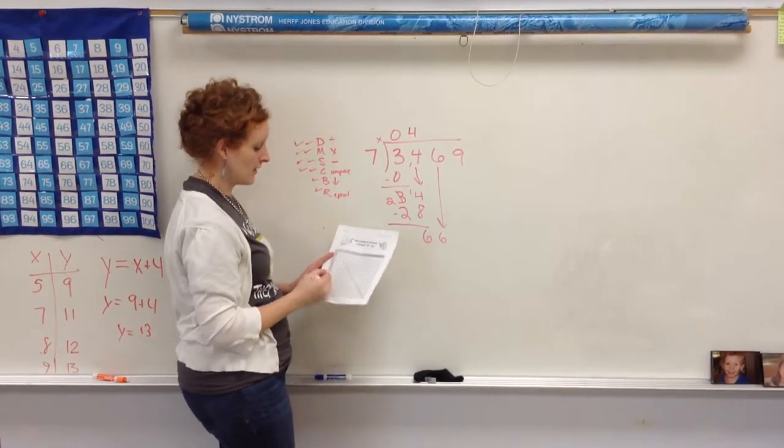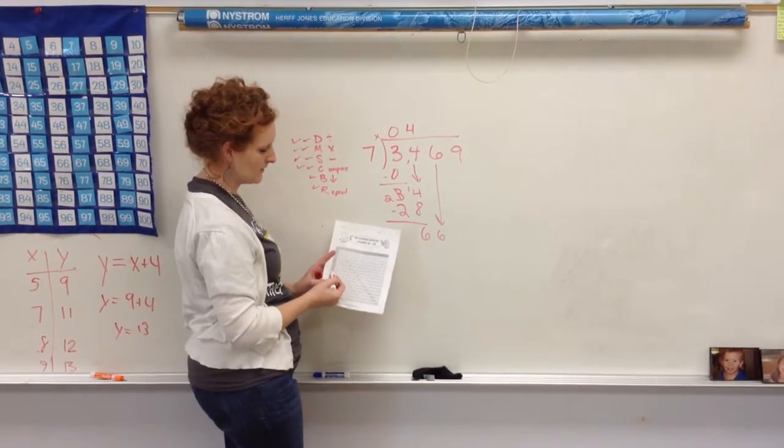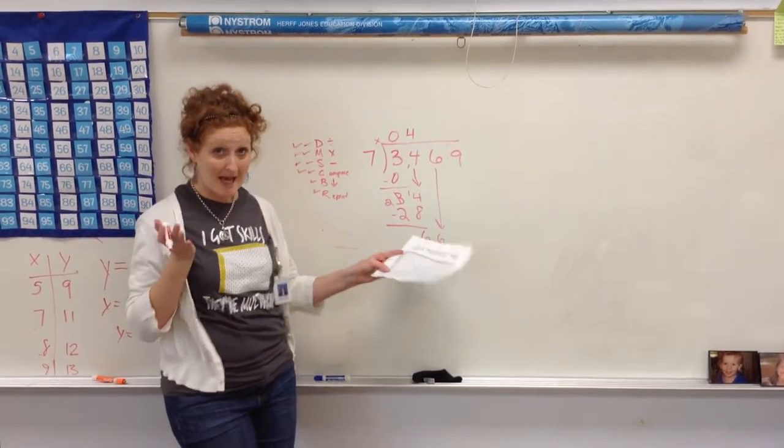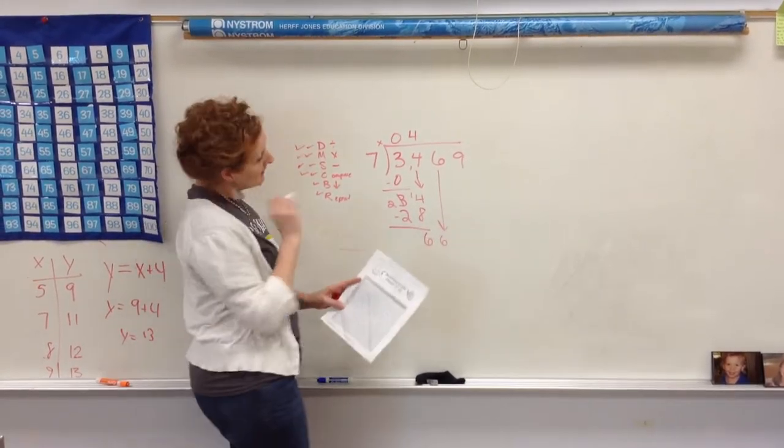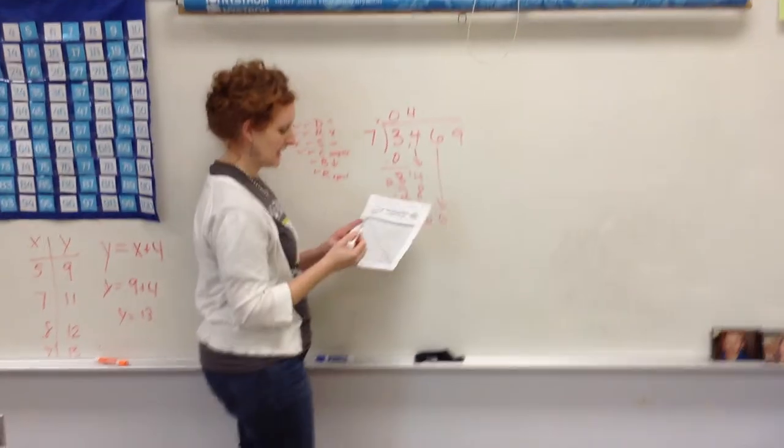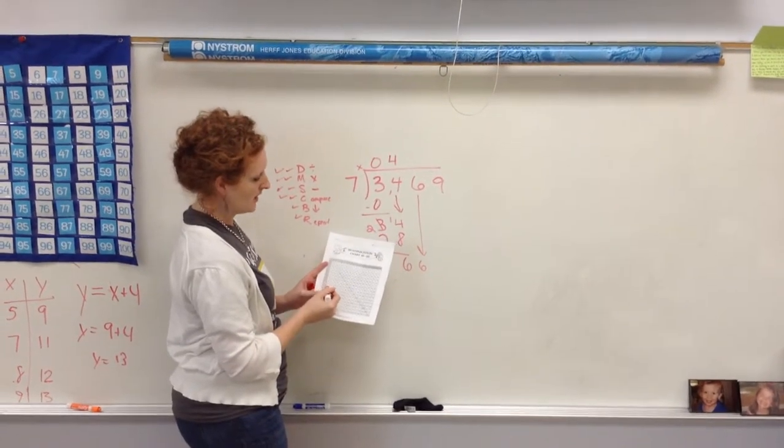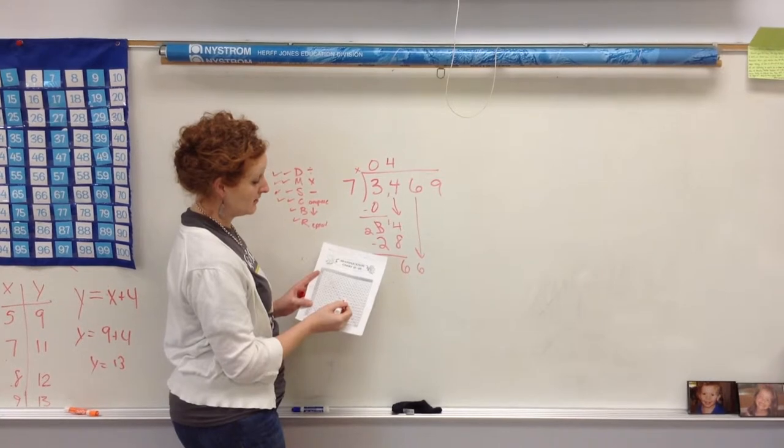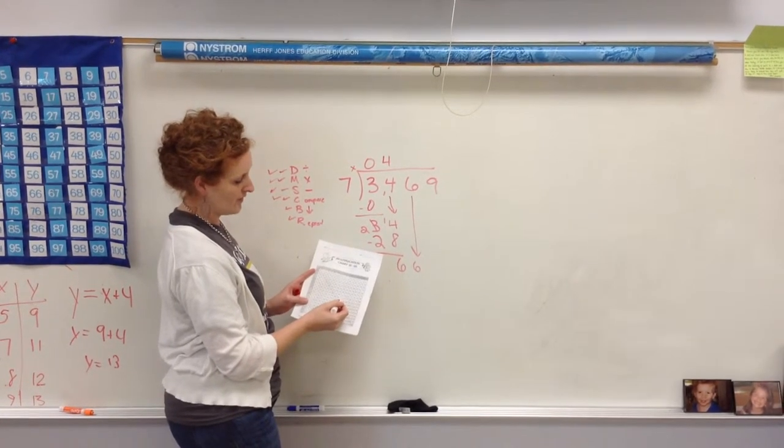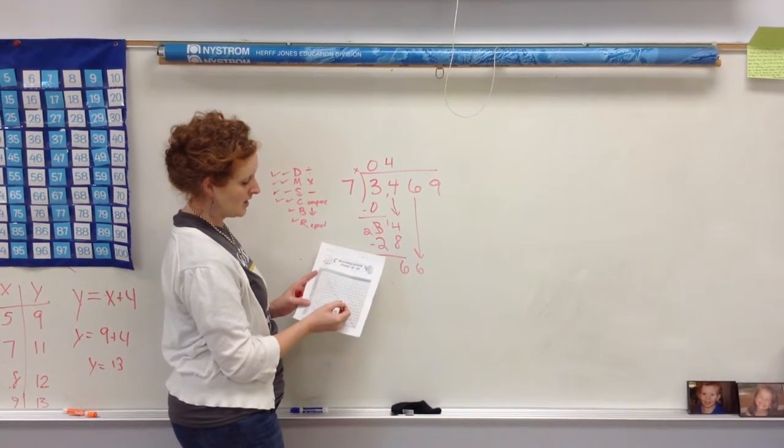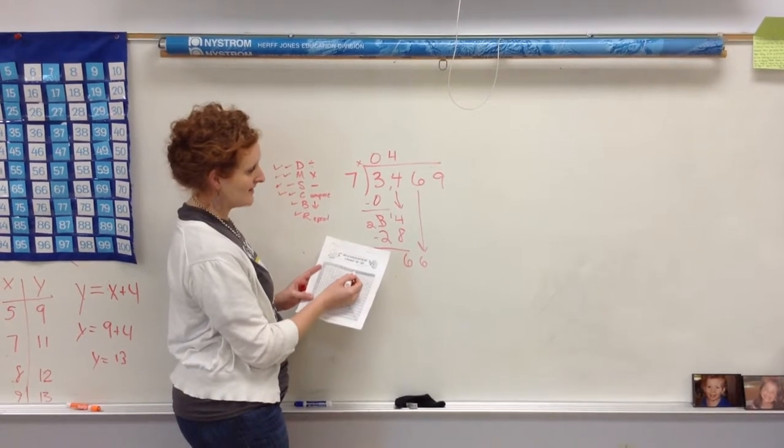So now I have 66. So I go back to my row of 7. How many times will 7 go into 66? So I'm on my row of 7, and I go across 56, 63, 70. That's too big. So I'm going to go back. It goes in 63. So that means 9 times.